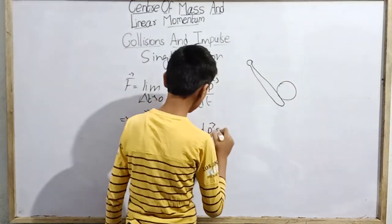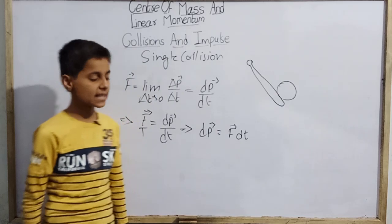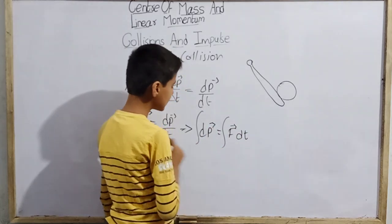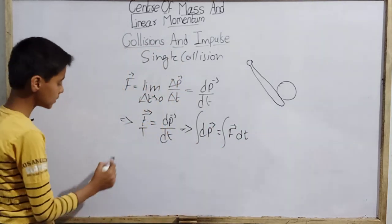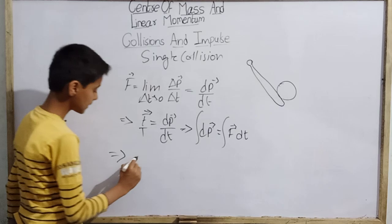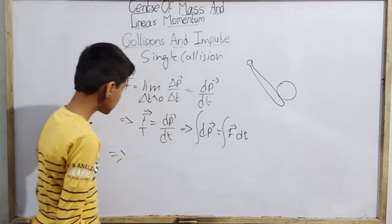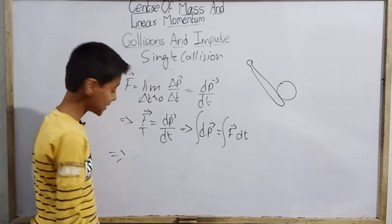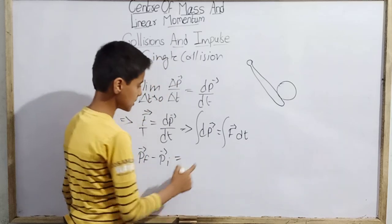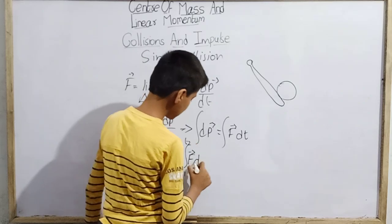We got the relation: vector F = d(vector p)/dt. Doing cross multiplication gives d(vector p) = vector F dt. Integrating both sides, we get the integral of d(vector p), integrating from initial to final. This gives us delta vector p, which equals vector p_f minus vector p_i, equal to the integral from t1 to t2 of vector F dt.